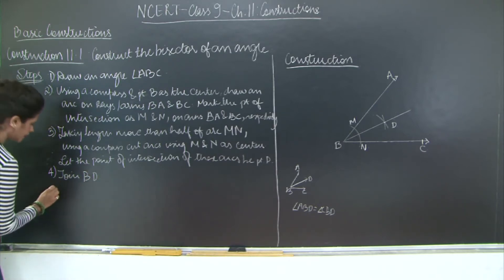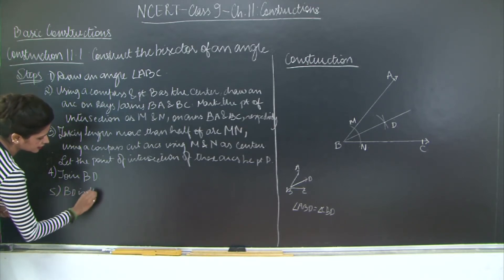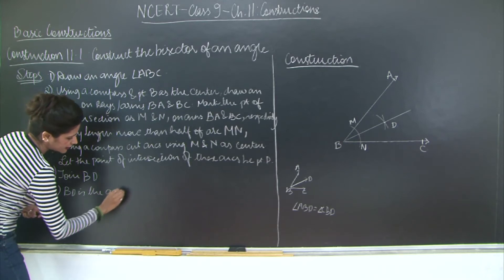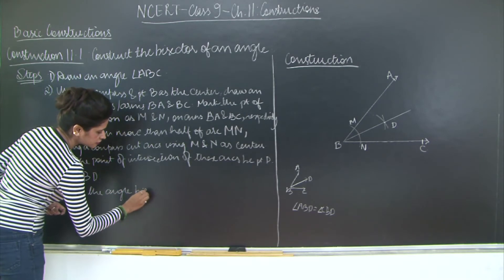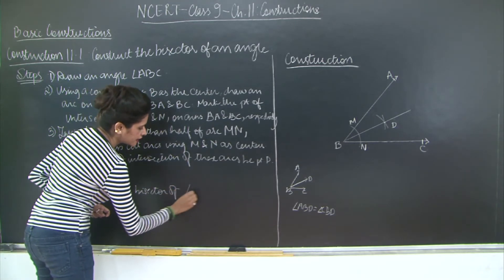Join BD. And fifth point is, BD is the angle bisector of angle ABC.